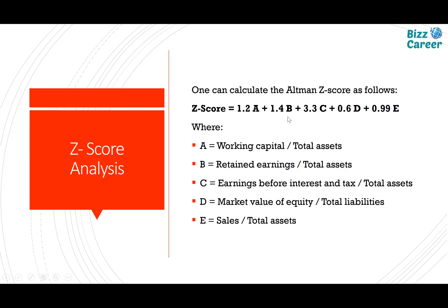The first component is working capital divided by total assets, with a weight of 1.2. The second is retained earnings divided by total assets, with a weight of 1.4. The third component is EBIT — earnings before interest and tax — divided by total assets, with a weight of 3.3. The weight for the fourth component is 0.6.